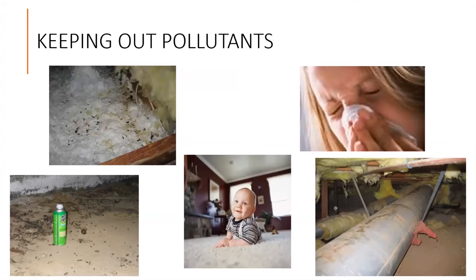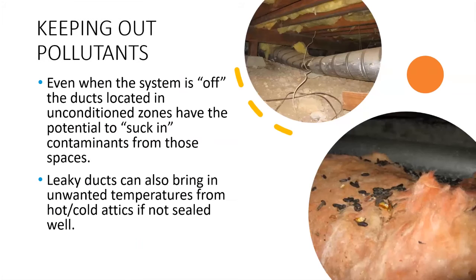These images remind us that when we talk about indoor air quality, we're not just talking about carbon monoxide or VOCs and moisture. We're also talking about pesticides and rodent feces and other allergens that are outside. Do you know any friends or family members who live with chronic health and respiratory issues? Even when the systems are off, ducts located in unconditioned zones have the potential to draw in contaminants from those spaces. Leaky ducts can also bring in unwanted temperatures from hot and cold attics, if not sealed well.